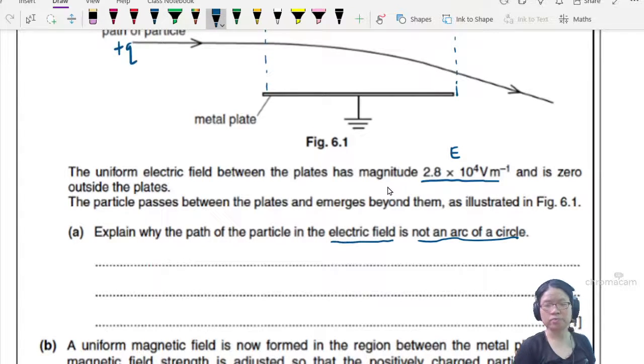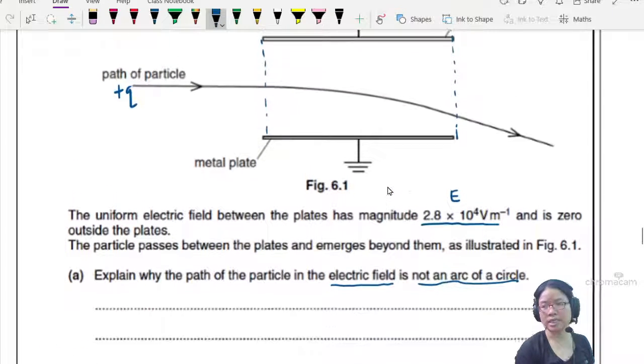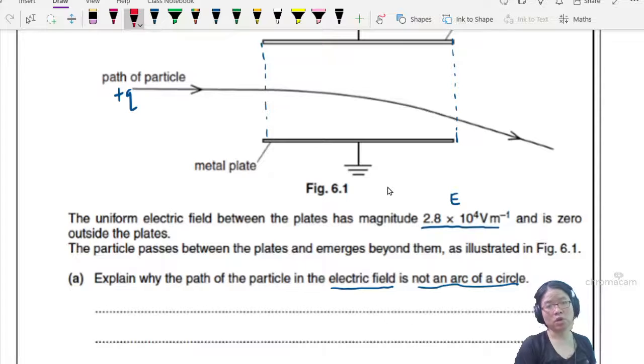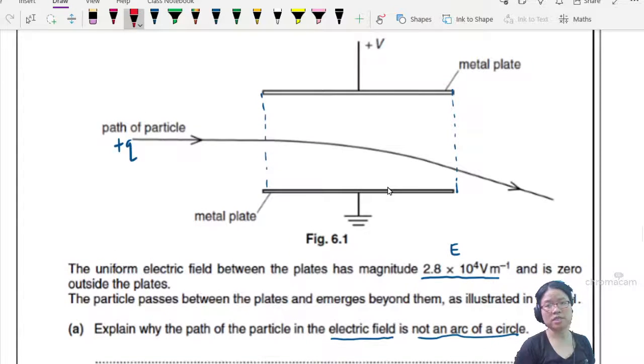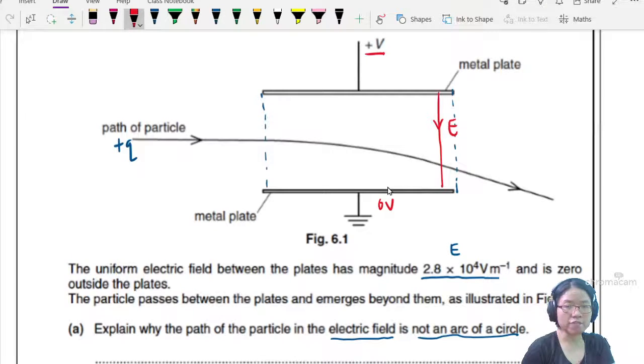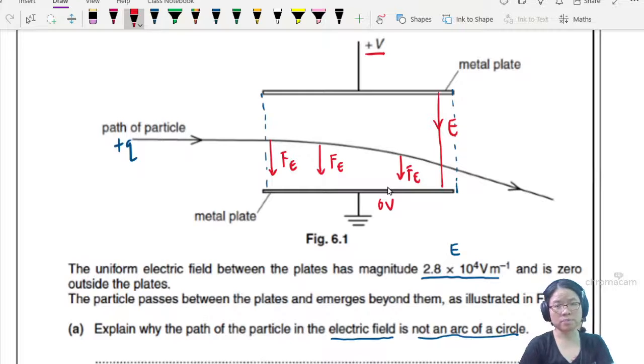Explain why the path of the particle is not an arc of a circle. Well this is electric field, so first things first we need to think about the direction of the electric force. The positively charged will be attracted to the low potential because this is positive V and this is grounded, zero V. So the direction of your electric field strength is like this, from high potential to low potential. Which means forces acting on the positive charge will follow the same direction as your electric field. So Fe is always like this.